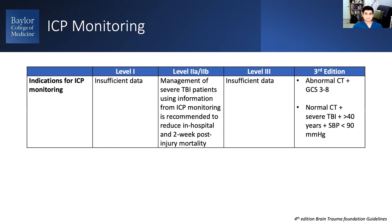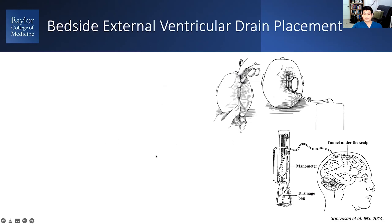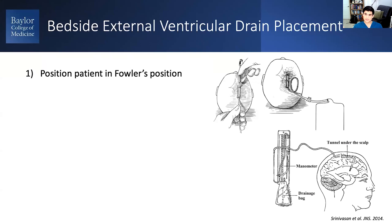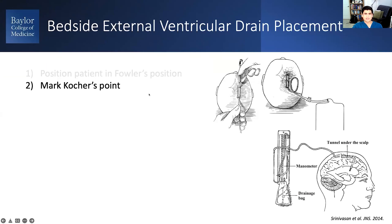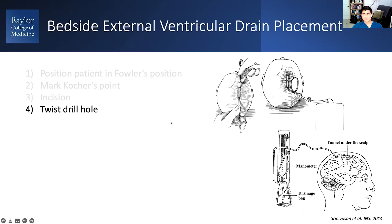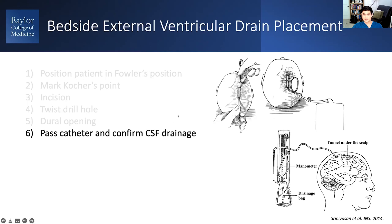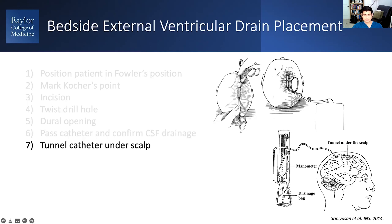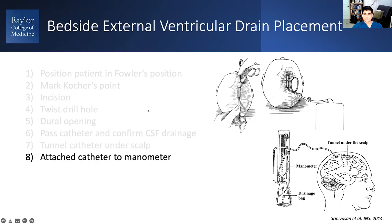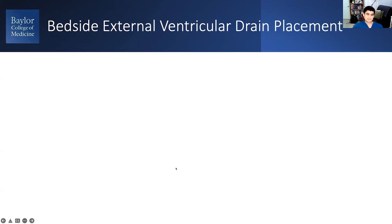Some of you may have already placed an external ventricular drain, so I'll just be reviewing how to do that. You place the patient supine with the head of the bed up — this is typically called the Fowler's position. With the head in a neutral position, you mark Kocher's point in the right frontal area, make your incision, do your twist drill, perform your dural opening, pass your catheter, and then tunnel it under the scalp. You then attach your catheter to your manometer.